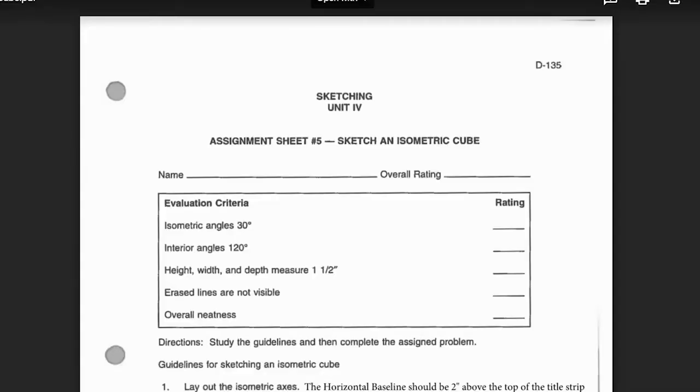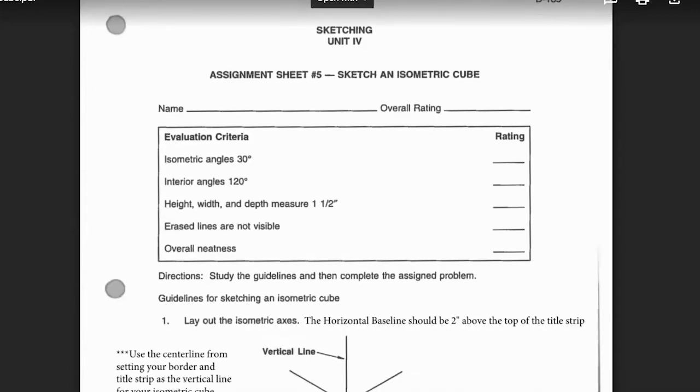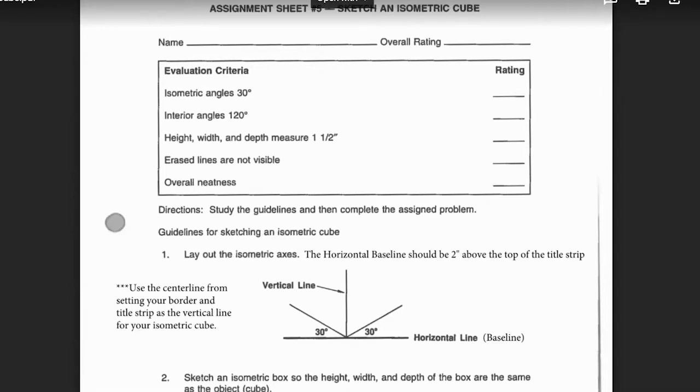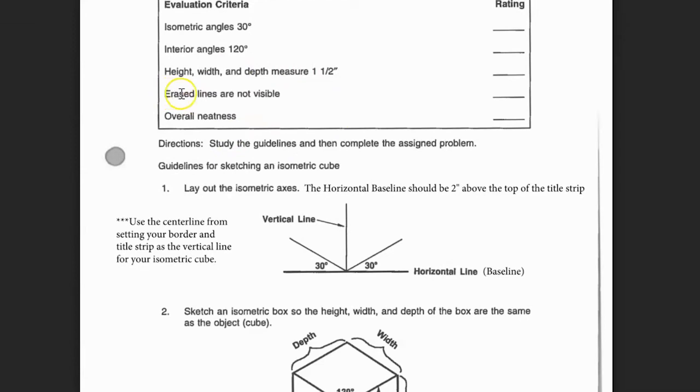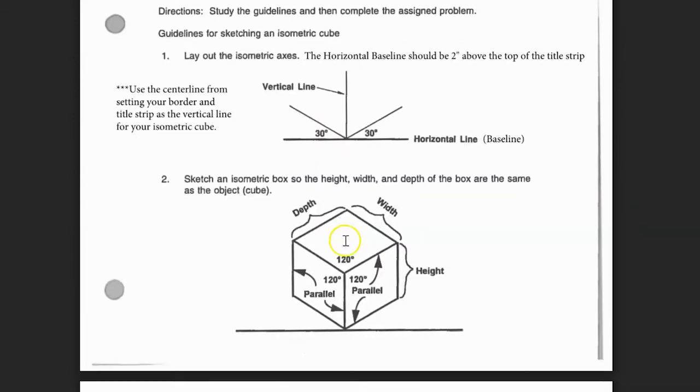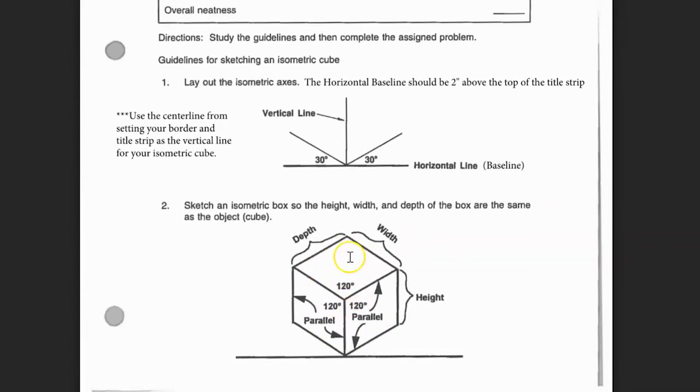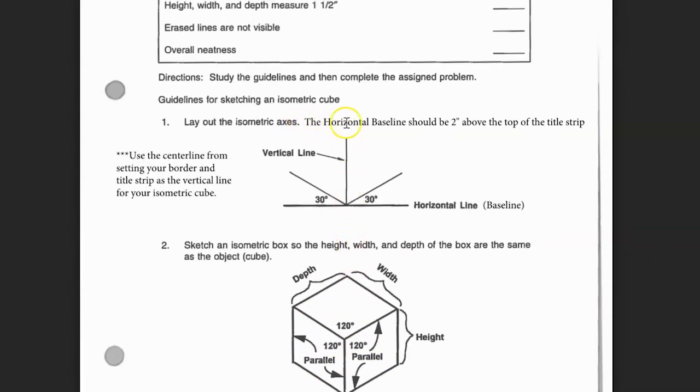These are the directions that are posted in our classroom that you can reference at any point. It talks about the angles that we're going to use. It outlines the height, width, and depth measurements will all be 1.5 inches. And our erased lines, or construction lines, are going to be very light and not visible. The first thing we need to do is step 1, which is lay out the isometric axes. The term isometric means equal measure. What we're saying is that all of our measurements are going to be equal. Pay attention to the note that the horizontal baseline should be 2 inches above the top of the title strip. We will not be able to use the center line as noted in our directions.